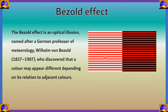So what is happening? This is the classical example of the Bezold effect. The Bezold effect is named after Willem von Bezold, who discovered it. He was a German professor of meteorology. He discovered that a color may appear different depending on its relation to adjacent colors.